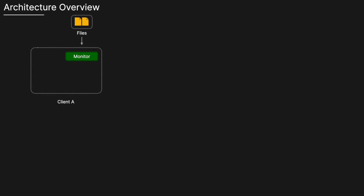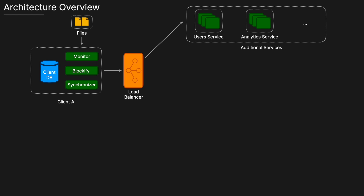The client is responsible for several functions. First, the Monitor watches for changes in files in the local workspace and notifies the Blockify service, which splits the file into smaller blocks and also handles reconstructing those blocks later. Once blockified, it notifies the Synchronizer, which relays changes to the Client Database and the Metadata Service. The Client Database locally stores information about the shared space, block hashes, object history, etc. It can be implemented with a lightweight database like SQLite, focused on managing file state locally on the client side.